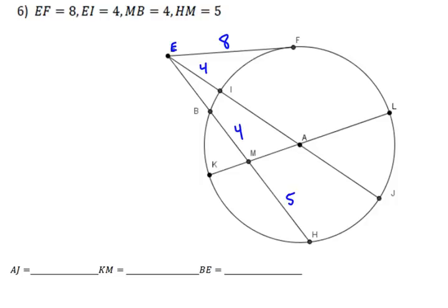When you're doing power of a point, you're looking for different equations that allow you to solve things. We know that if you've got a point outside a circle like E, then we have one set of equations, one with the tangent line there at 8, and then one with the EI which is 4. And then for M, that's the easier one where you would just do 4 times 5, but we don't know what ML is.